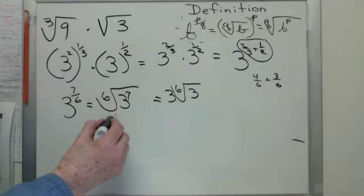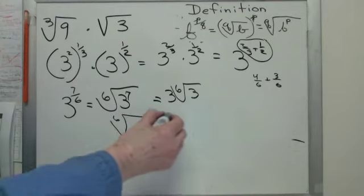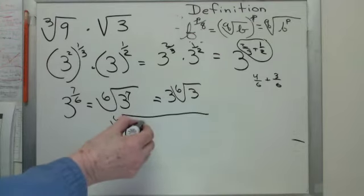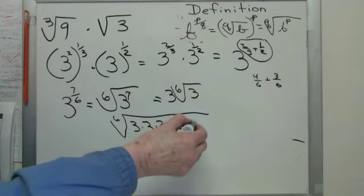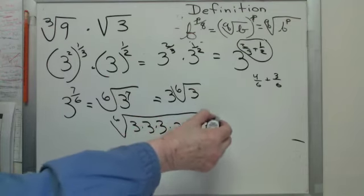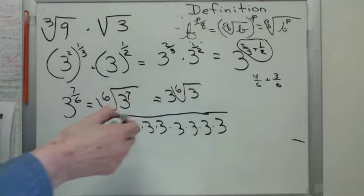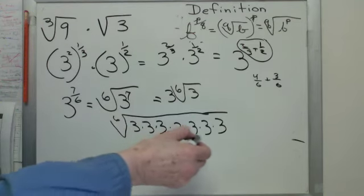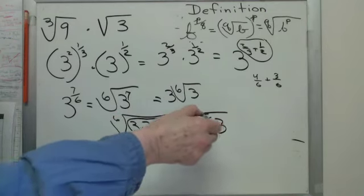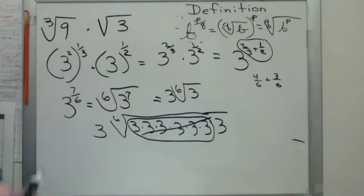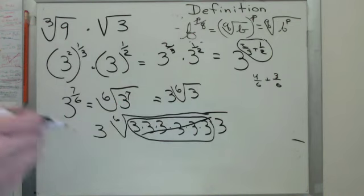You know why that happens? Well, you could think of this, this is really stretching the point, but 3 to the 7th means 7 3's: 2, 3, 4, 5, 6, 7. Right? 6th root means every time I have 6 things the same, I can take the 3 out for that. So 3 6th root of 3 is the answer.